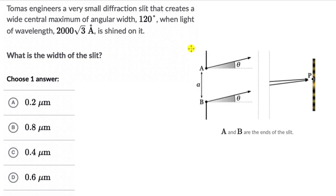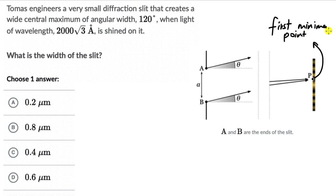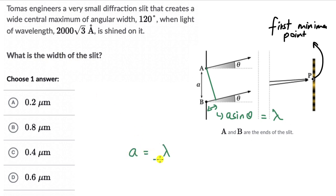Just like before, we start by drawing the situation. We have a slit of width a, and rays coming out from the two ends are meeting at the first minimum point B. The path difference between A and B is a·sinθ, and this equals λ for the first minimum (n = 1). So a·sinθ = λ, meaning the slit width a = λ / sinθ. We know λ = 2000√3 angstroms = 2000√3 × 10⁻¹⁰ meters.